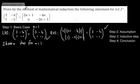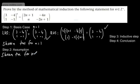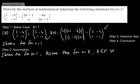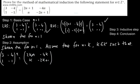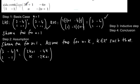We simply substituted 1 into either side of the matrix equation. Now for step 2, the assumption: shown true for n=1. We now assume true for n=k, where k is a positive integer, such that (3, -4; 1, -1)^k = (2k+1, -4k; k, -2k+1). That's our assumption.